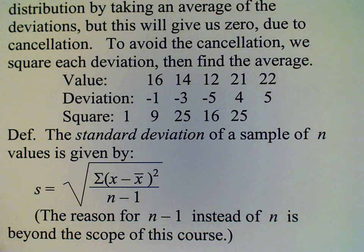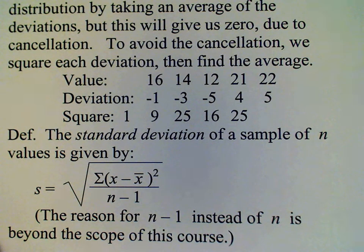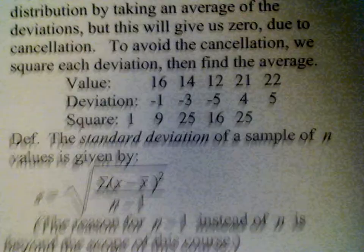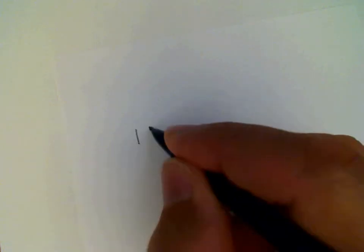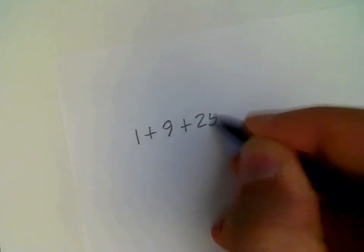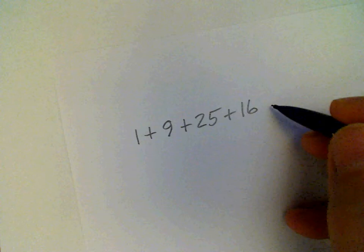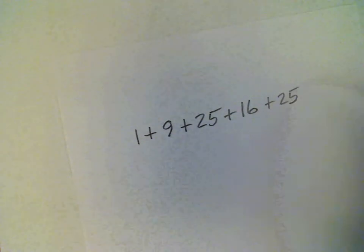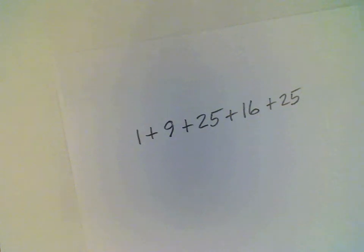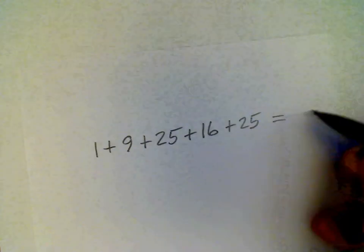So let's continue on with this example. The squares of the deviations that we had in that previous example were one, nine, 25, 16, and 25. So we need to add these up, one plus nine plus 25 plus 16 plus 25. And the total there is 76.